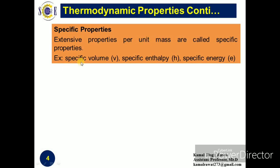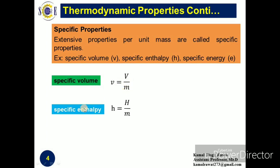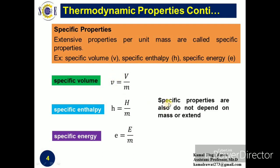Examples of specific properties are specific volume, specific enthalpy, and specific energy. Specific volume is defined as volume per unit mass of the system. Specific enthalpy is enthalpy per unit mass, and specific energy is energy per unit mass. Specific properties are also denoted by lowercase letters. You should remember that specific properties do not depend on the mass or extent of the system, so specific properties are a special case of intensive properties.